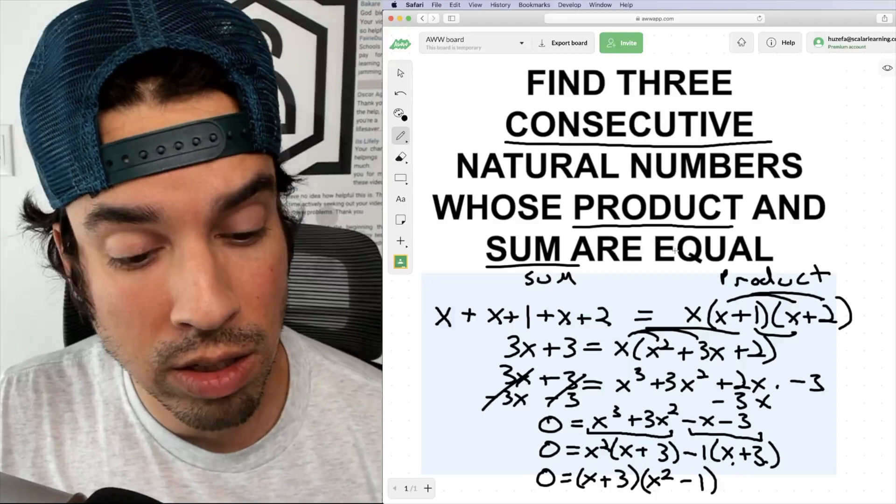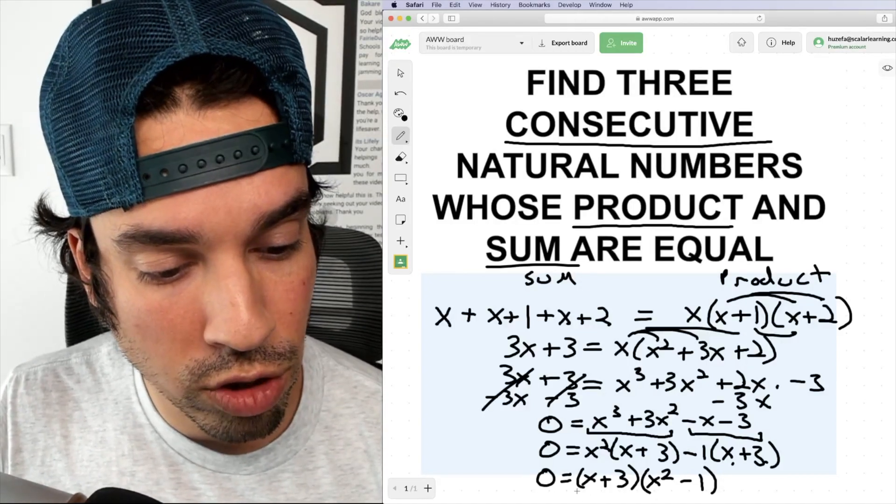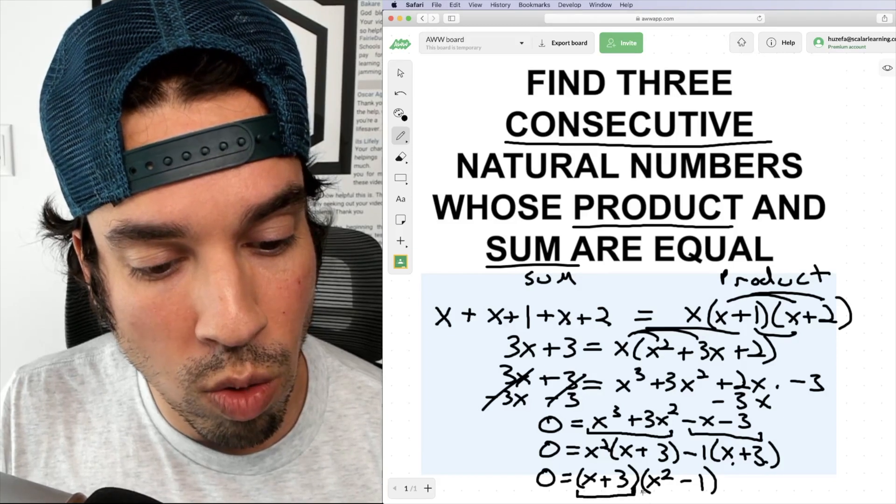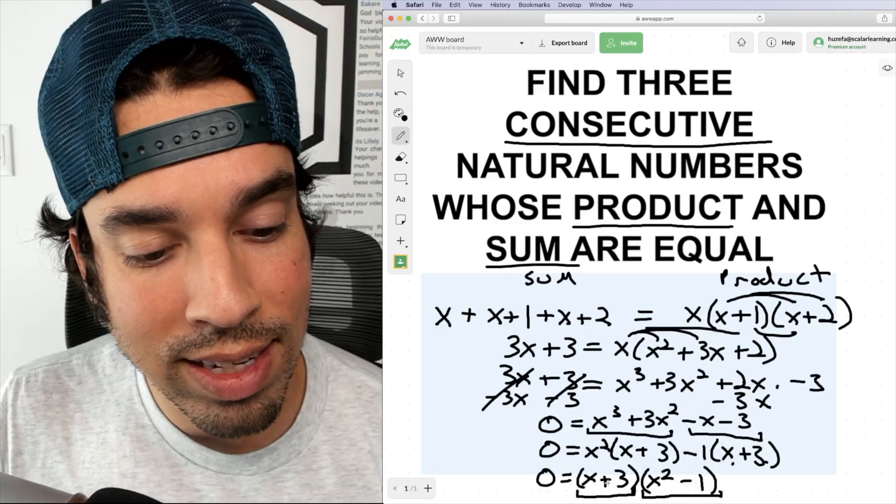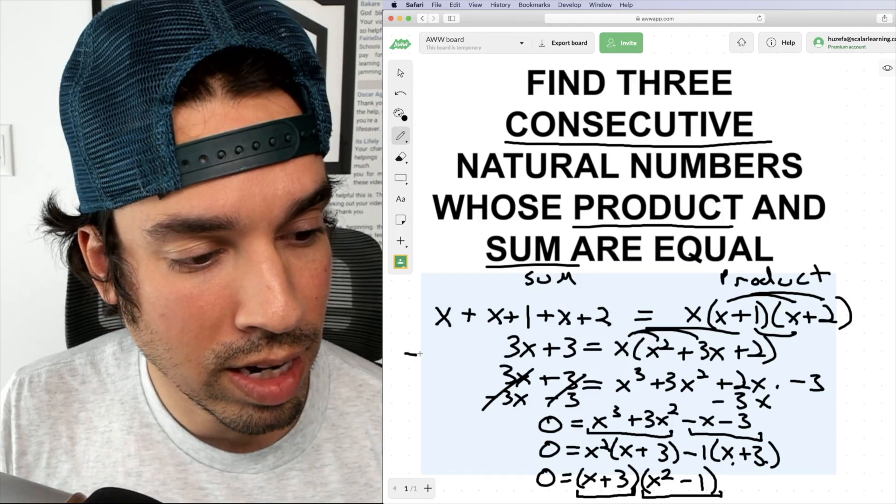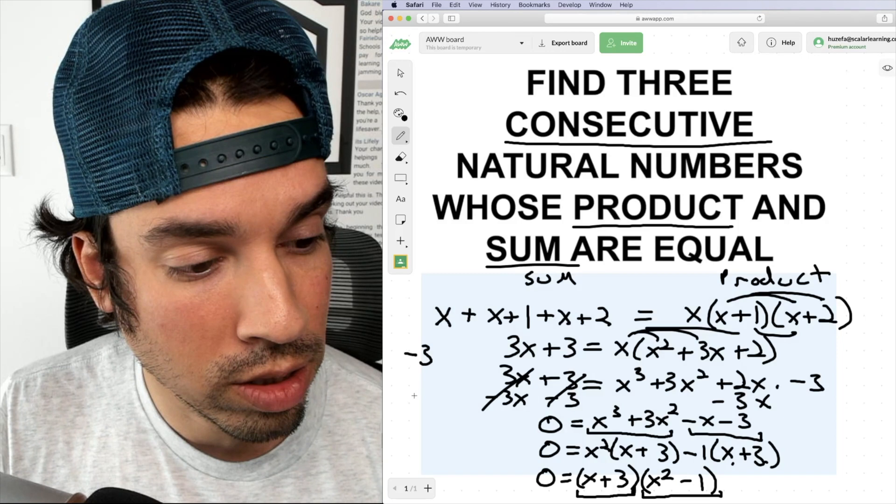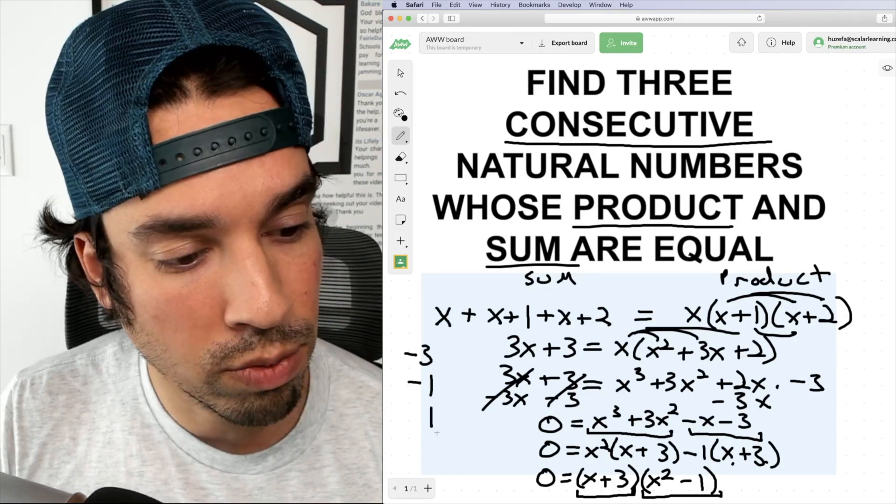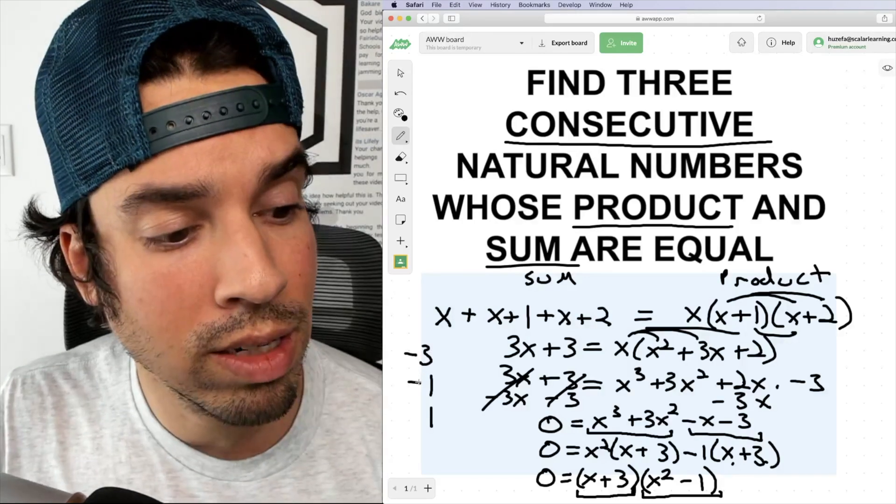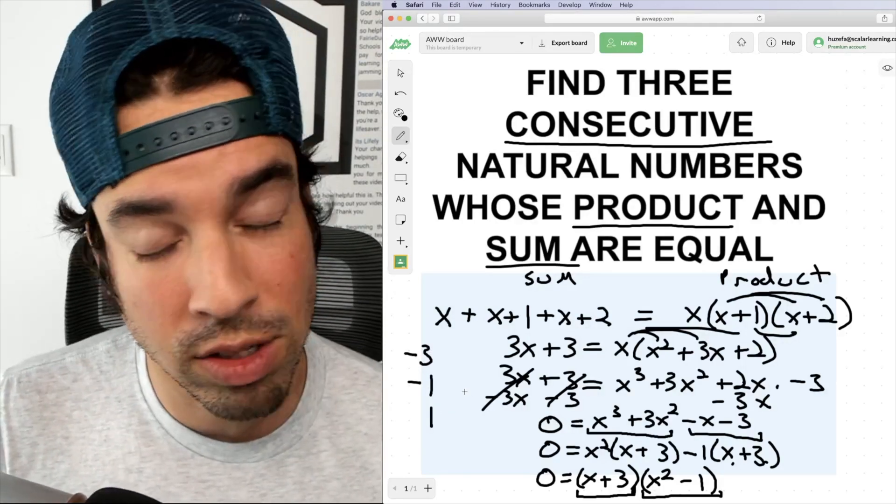All right, now we've got something solvable, okay? Because how is this gonna equal zero? This is gonna equal zero when this guy equals zero and or when this guy equals zero. So what makes this binomial go to zero? That would be negative three. What makes this one go to zero? Well, there's two options. Would be negative one, right? Negative one squared is one minus one is zero or positive one. So these are my three different possibilities for x, which by the way, they all work and they all satisfy this equation.